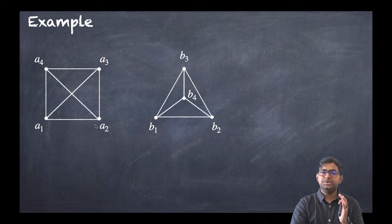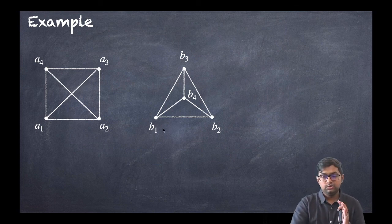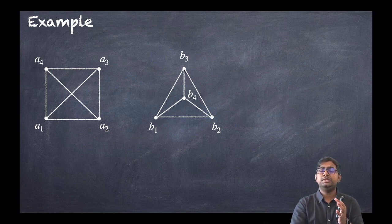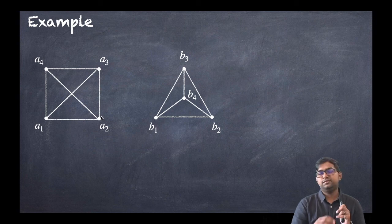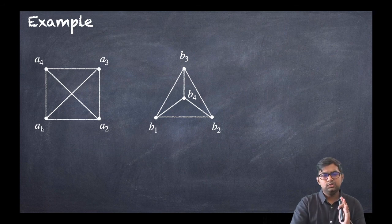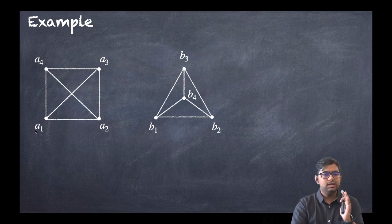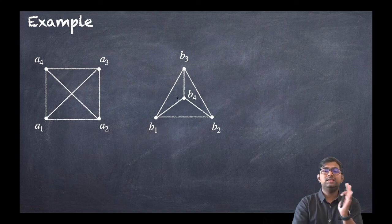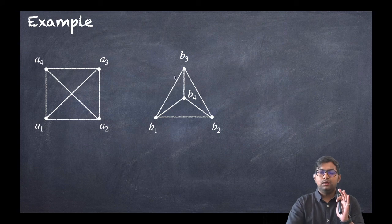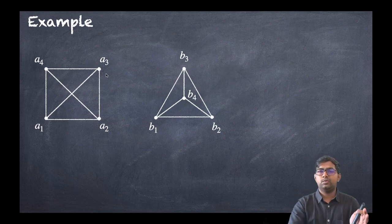Now check the degree of each vertex. In the first graph: a1 is degree 3, a2 is degree 3, a3 is degree 3, and a4 is degree 4. So the second graph must have corresponding degrees. In the second graph: b1 is degree 3, b2 is degree 3, b3 is degree 3, and b4 is degree 3. So the correspondence becomes: a4 maps to b3, a2 maps to b2, a1 maps to b4.